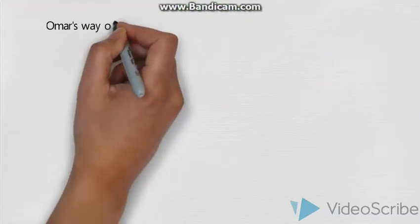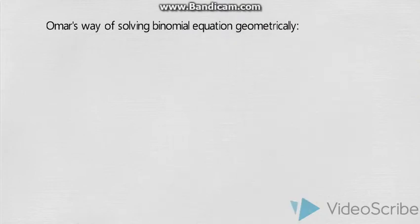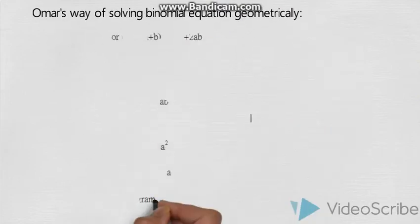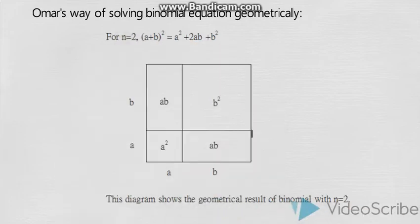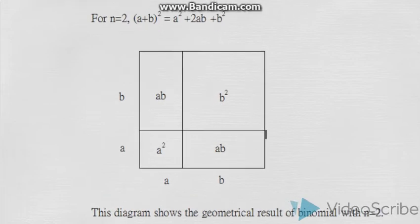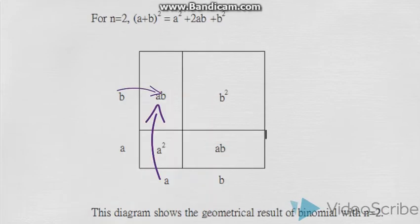Omar's way of solving geometrically is given by four boxes, which we will intersect both A and B to get the result as AB.